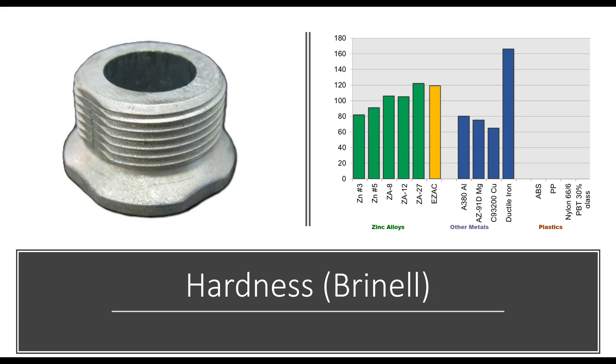A material's hardness is its ability to resist deformation and indentation. As shown here, zinc alloys can achieve up to 120 Brinell compared to 80 Brinell for aluminum 380. The component shown here is a piston guide made in EZAC. It was the only alloy tested that was hard enough to withstand the wear of the piston that cycles through its inner diameter.